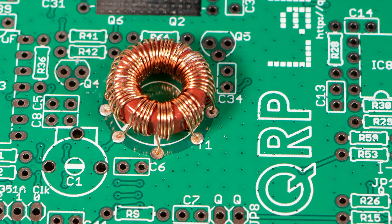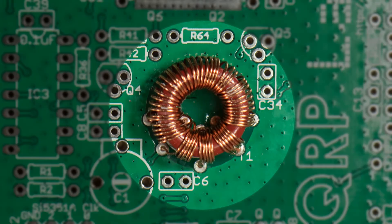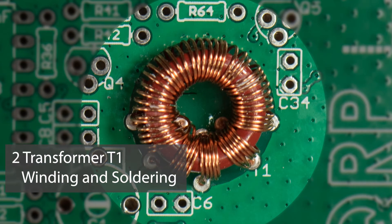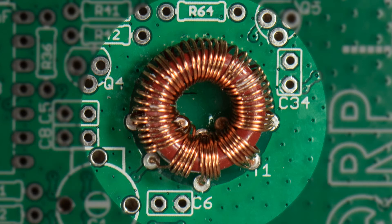Making and fitting this transformer is quite fiddly, so let's take a look at how it's done. Transformer T1 has a main primary winding and a smaller primary winding plus two more secondary windings.